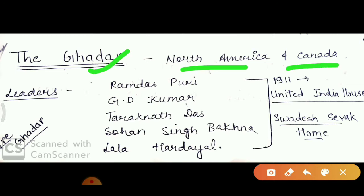This party became leaders. We have to keep their names: Ram Das Puri, G.D. Kumar, Tarek Naad Das, Sohan Singh Bhakna, and Lala Hardiyal. This is a pre-GADR phase — where the GADR party is not officially made. In 1911, they formed the United India House in North America. On the other hand, another party in Canada was called Swadesh Sewak Home.